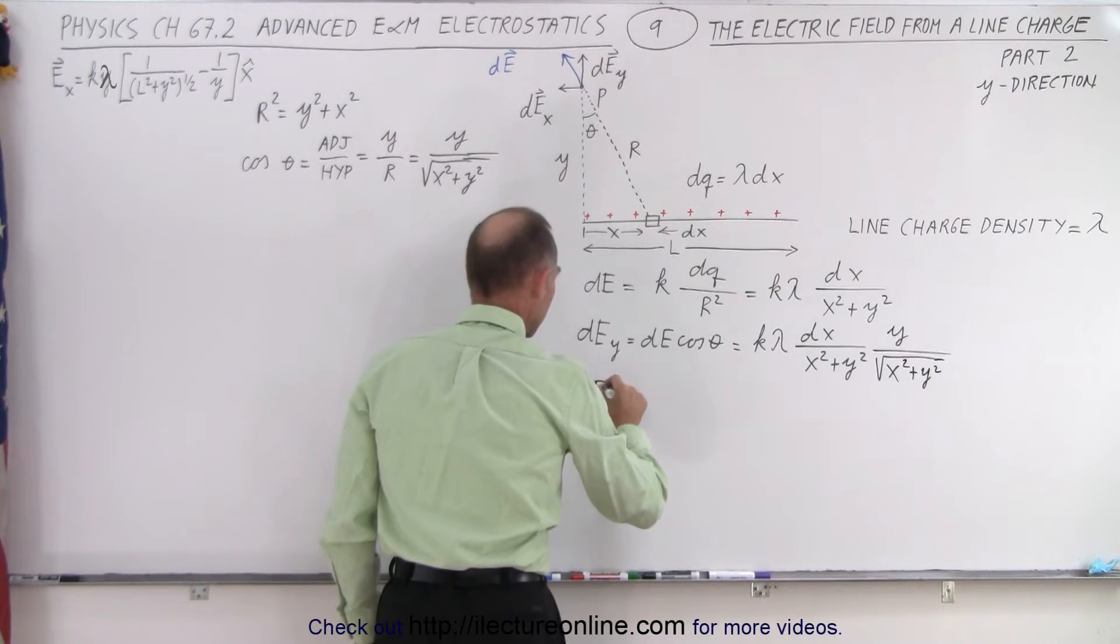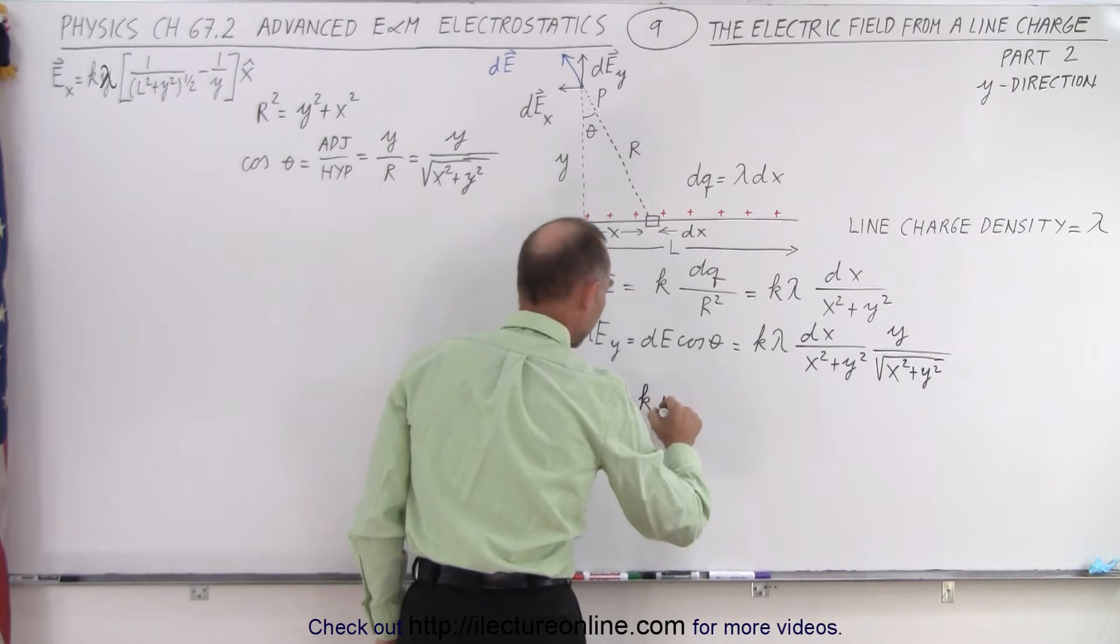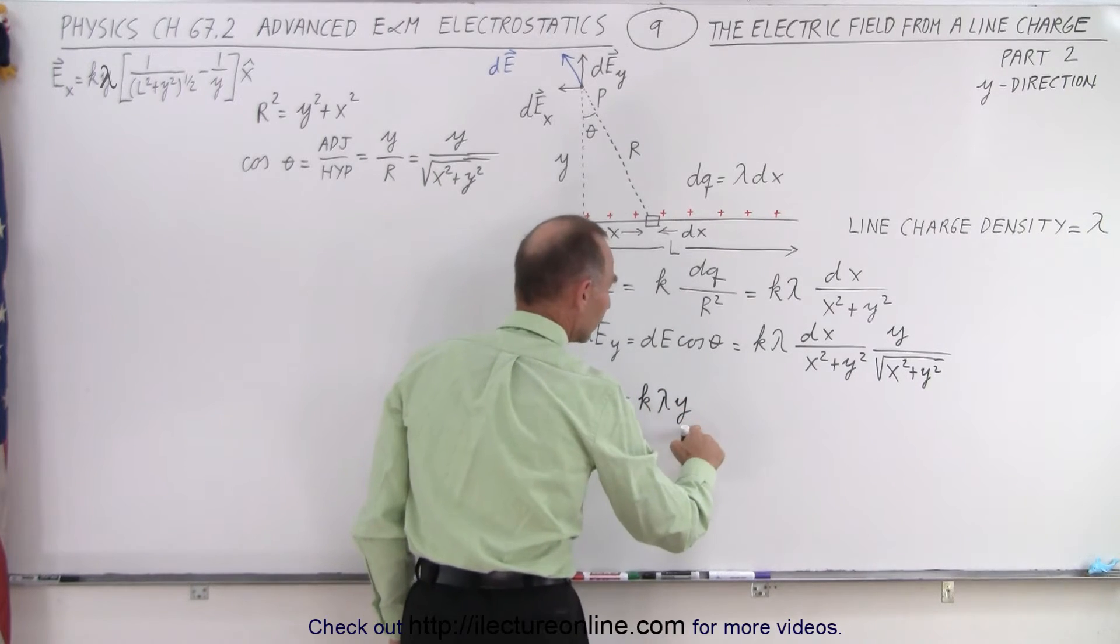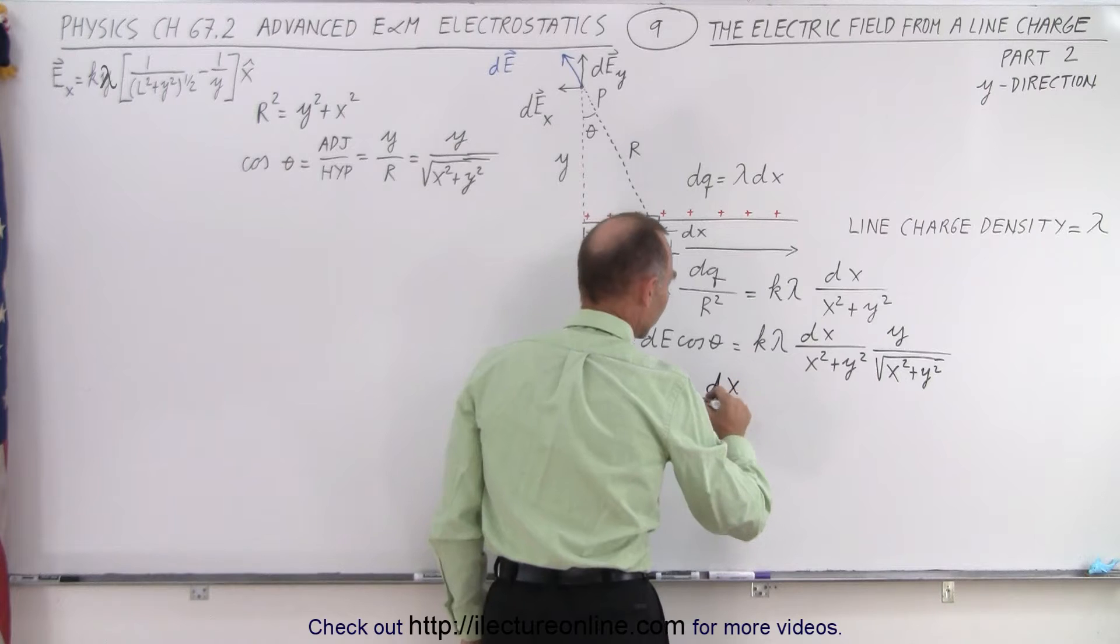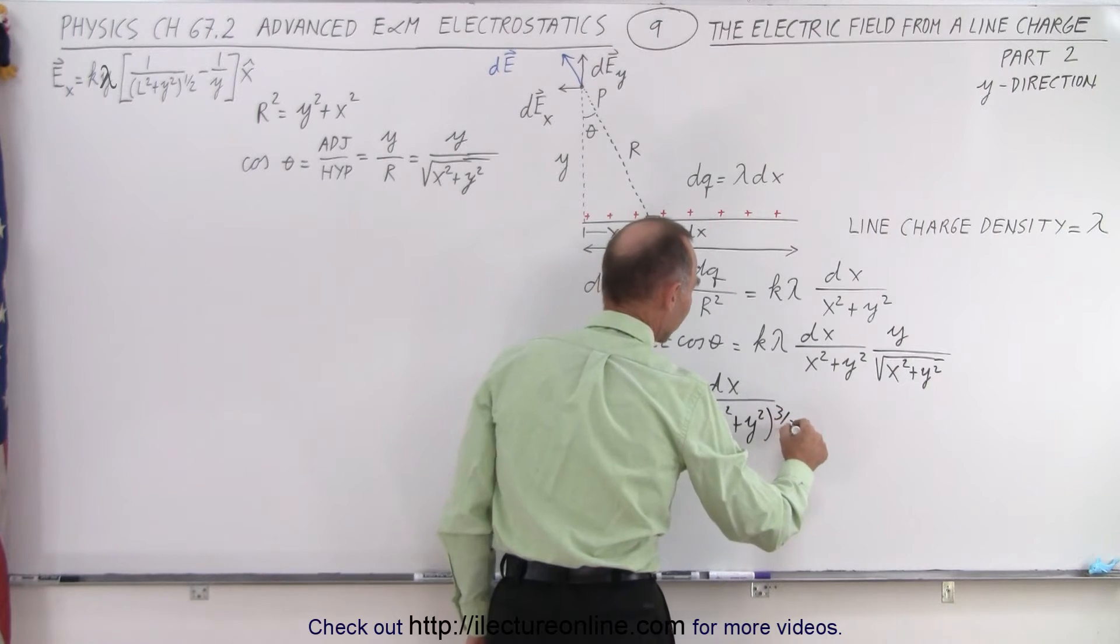So then we can write dE in the y direction as follows. We know that y is a constant, so we end up with k lambda y. These are all constants. Now we have dx divided by x squared plus y squared to the 3 halves power.